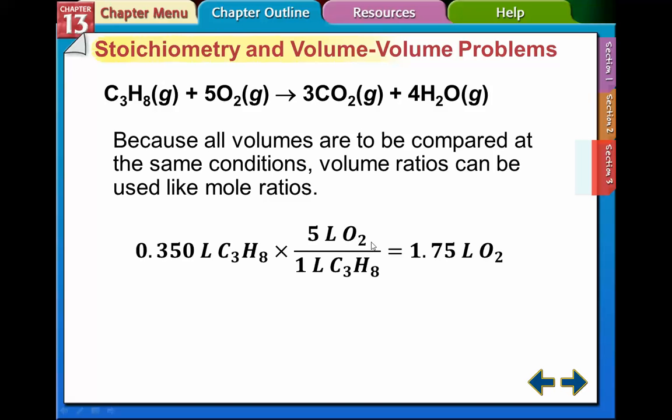We've got the 5 liters of oxygen on top. We've got the 1 liter of propane on the bottom. So whatever we're given in our problem, we always put that on the bottom. Whatever we're trying to find out, we put that on the top. So we're just going to multiply across here.